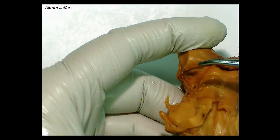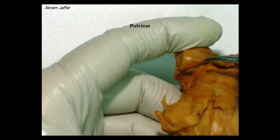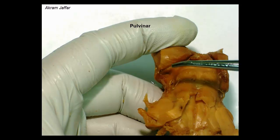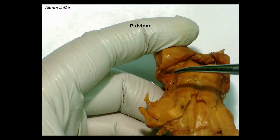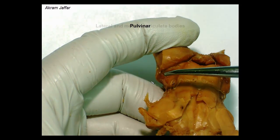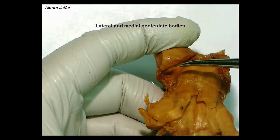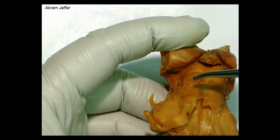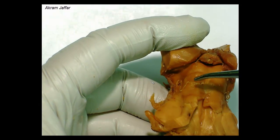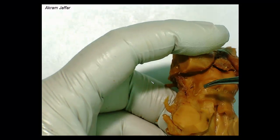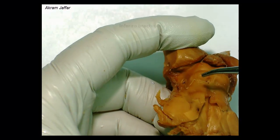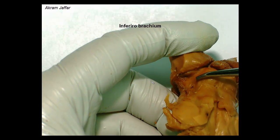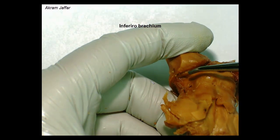This is the region of the pulvinar, the posterior part of the thalamus. Below it, we can see the lateral and medial geniculate bodies. Fibers that connect the inferior colliculus with the medial geniculate body form a ridge known as the inferior brachium.